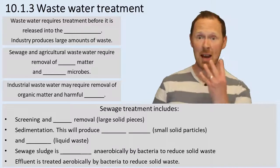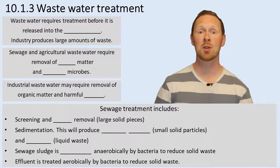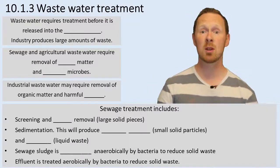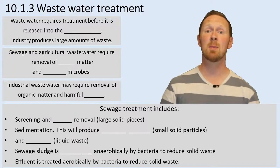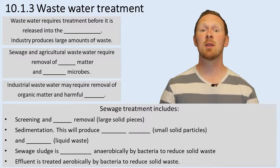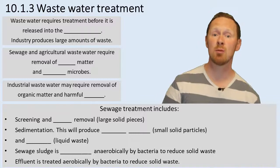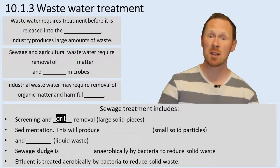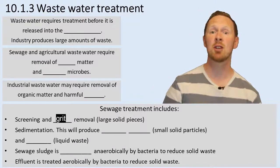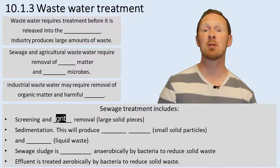There are four steps that you need to know about in terms of turning wastewater into potable water — water that we could at least treat to be drinkable. The first step is screening and grit removal, where the large pieces of waste are removed initially.